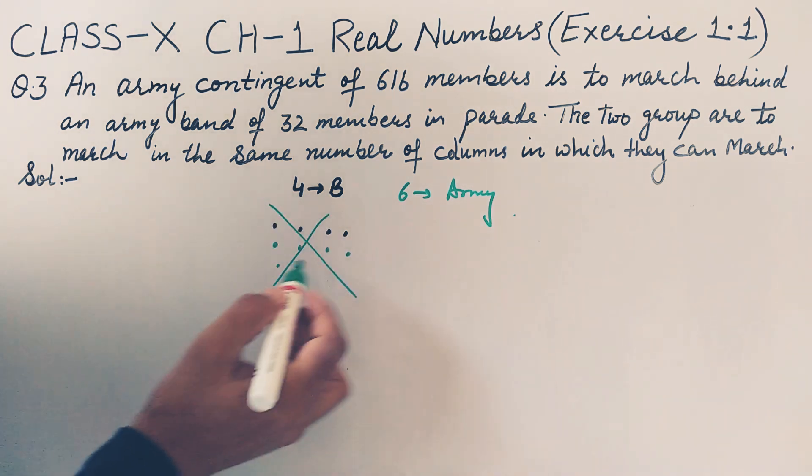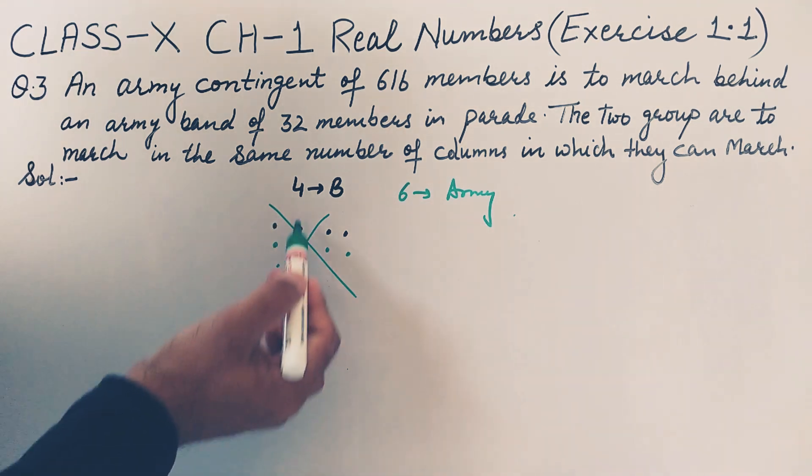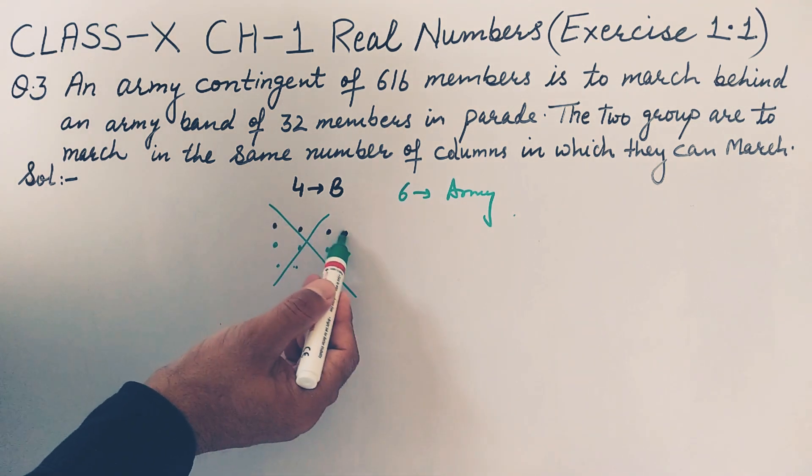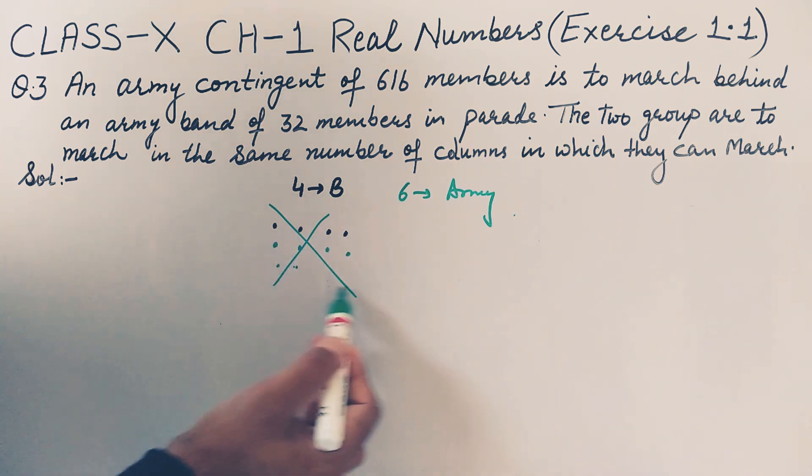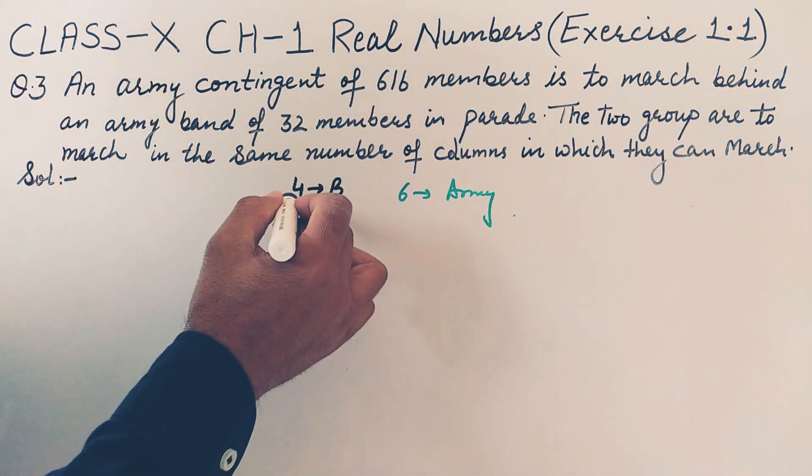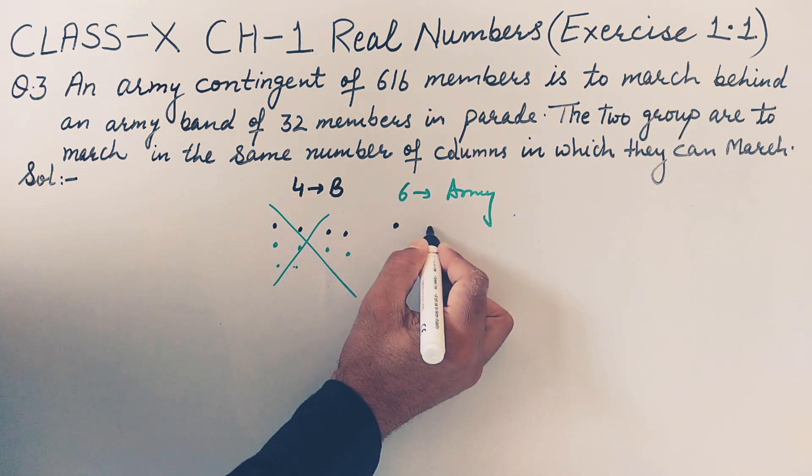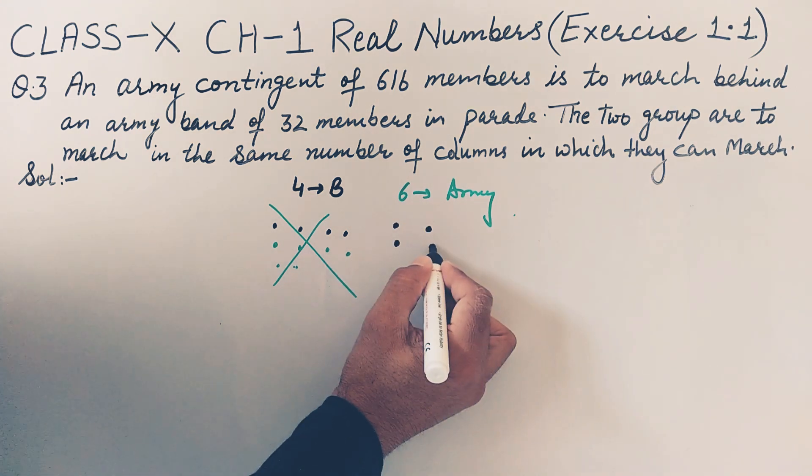These are not arranged properly because two are left. They all should have the same number of columns. If they are moving in four columns, then all these army members are not set in the four columns. So this arrangement is not possible.